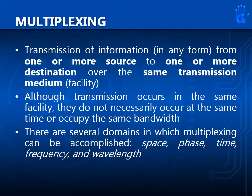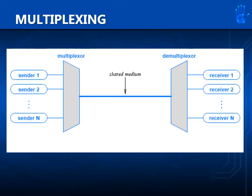There are several domains in which multiplexing can be accomplished: space, phase, time, frequency, and wavelength. We have an n number of senders which will send separate data each. Their message signals will all go to a multiplexor — sometimes called multiplexer or simply mux — which will combine all their data and multiplex it into one channel or path, called a shared medium. It will then arrive into a demultiplexor, which will reverse the process and separate each message to send to the corresponding receiver.